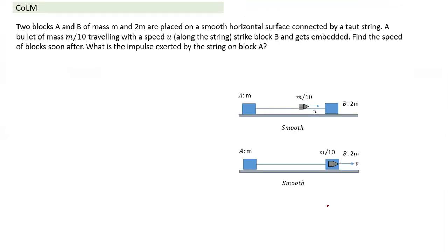We'll go through some more questions based on conservation of linear momentum. There are two blocks A and B; A has mass 2m and B has mass M. They are connected by a thread. A bullet of mass m/10 comes and gets embedded in block B. The question asks us to find the speed of the block soon after the bullet embeds.